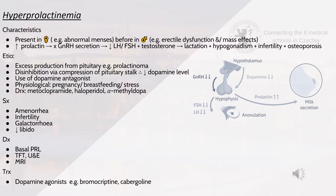Hyperprolactinemia presents in females as abnormal menses, or in males as erectile dysfunction and mass effects. Increased prolactin inhibits gonadotropin-releasing hormone, leading to decreased LH, FSH and testosterone, resulting in infertility, osteoporosis, lactation and hypogonadism.